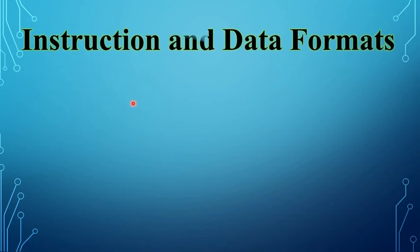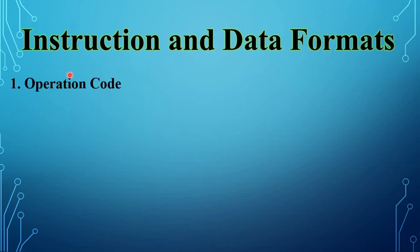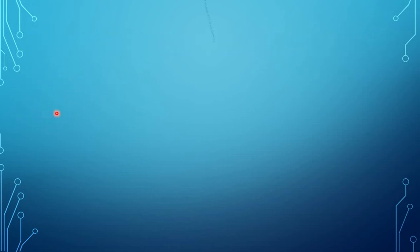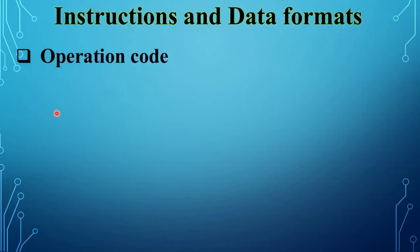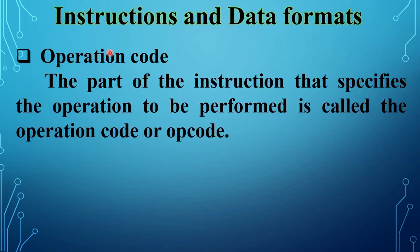The next topic is instruction and data formats. The microprocessor operates under the control of a program. The program consists of a set of instructions stored in memory. Each instruction specifies an operation and the data on which the operation is to be performed. Thus an instruction has two parts: operation code and operand. The part of the instruction that specifies the operation to be performed is called opcode or operation code.